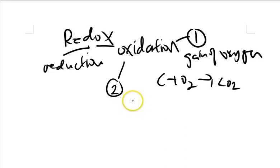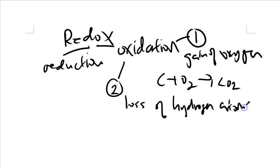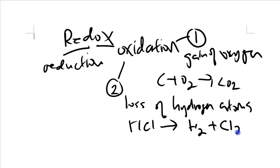The second definition of oxidation is the loss of hydrogen atoms. A simple example would be HCl being electrolyzed to give you H₂ plus Cl₂. During this reaction, HCl has lost hydrogen to form H₂ plus Cl₂. So we say that an oxidation reaction has occurred.